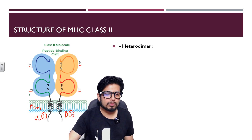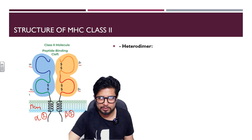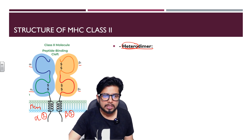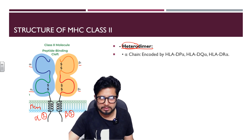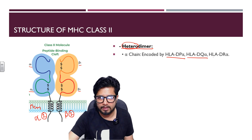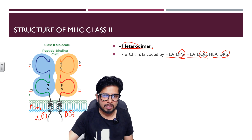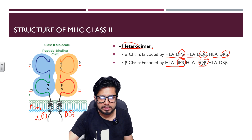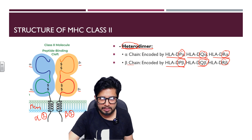The most important difference between MHC class 1 and class 2 is that MHC class 2 is a heterodimer. Hetero means different; dimer means made with two separate subunits — two alpha and two beta subunits. The alpha chain is encoded by HLA-DP alpha, HLA-DQ alpha, and HLA-DR alpha. The beta chain is encoded by HLA-DP beta, HLA-DQ beta, and DR beta.